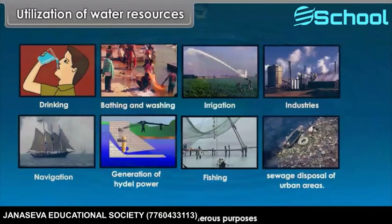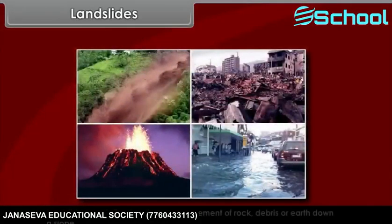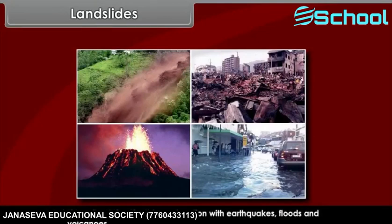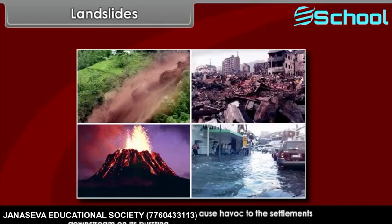Landslides are defined as the mass movement of rock, debris, or earth down a slope. They often take place in conjunction with earthquakes, floods, and volcanoes. A prolonged spell of rainfall can cause heavy landslides that can block the flow of a river for quite some time. The formation of river blocks can cause havoc to the settlements downstream on its bursting.